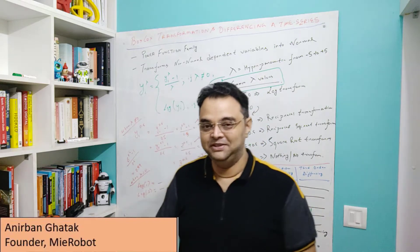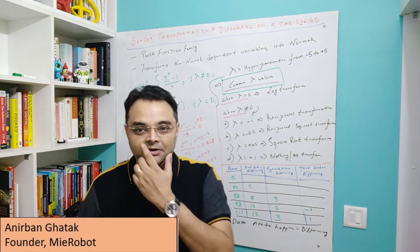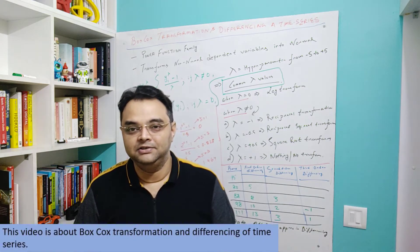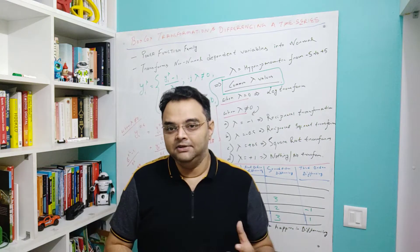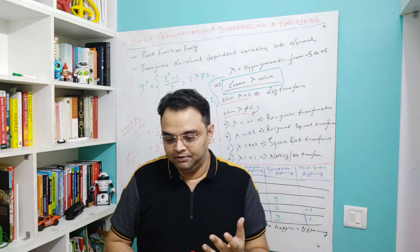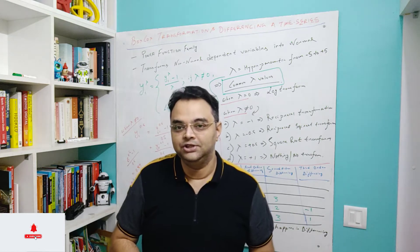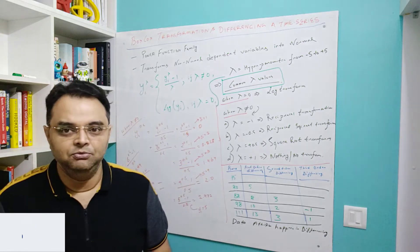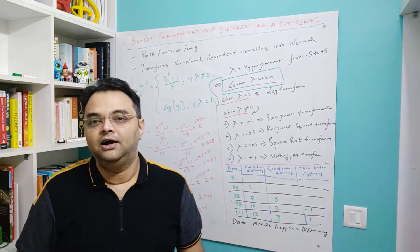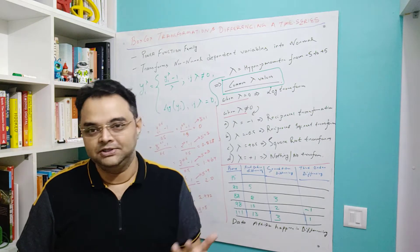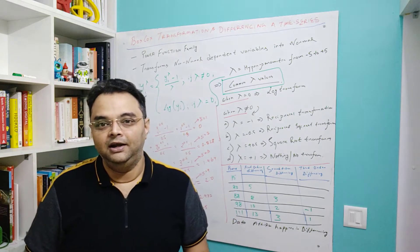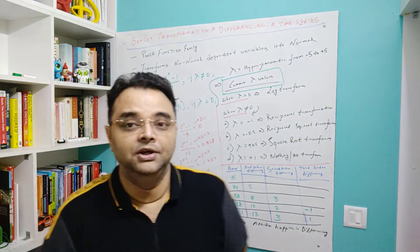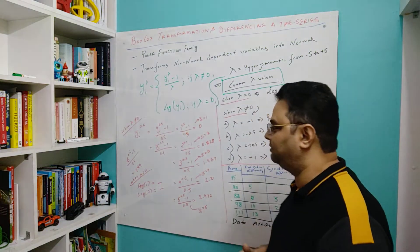Hello and welcome to the next video of our time series. In this video we will look at Box-Cox transformation and differencing in a time series. We saw that if we conclude our time series is not stationary and we have to make it stationary, you have a couple of options: differencing the time series at the first, second, or third degree, and the Box-Cox transformation.